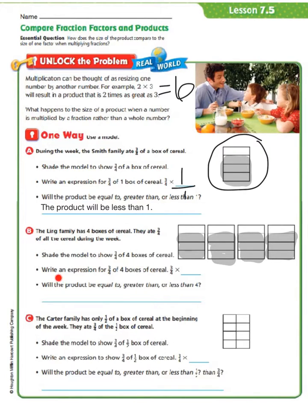The next step is to write an expression for 3 fourths of 4 boxes of cereal: 3 fourths times 4, written with the whole number over 1. Will the product be equal to, greater than, or less than 4? Anytime you multiply by a fraction, your product is going to be less than either one of your factors, so it is going to be less than 4.